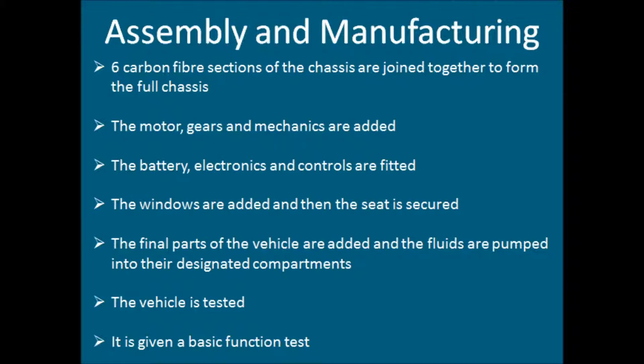The vehicle assembly begins when the six carbon fiber sections of the chassis are joined together to make the full chassis. Then the motor, gears and mechanics are added before the battery, electronics and controls are fitted. Soon after, the windows are added and the seat is secured. Even later, the final parts of the vehicle are added and the fluids are pumped into their designated compartments.